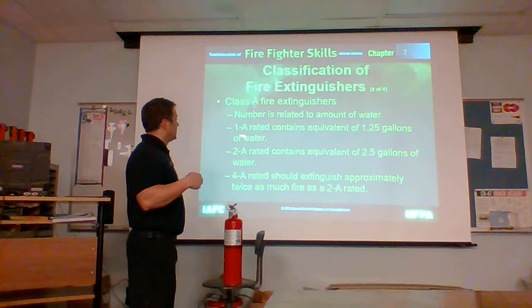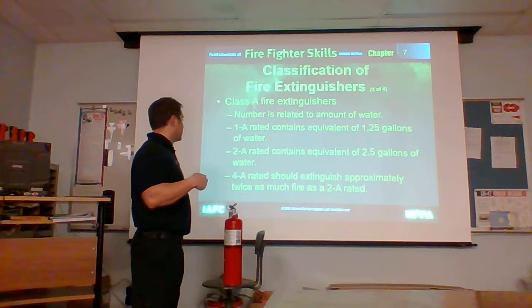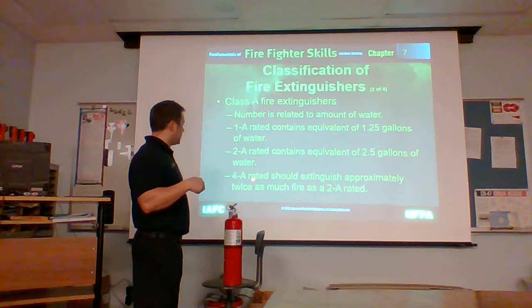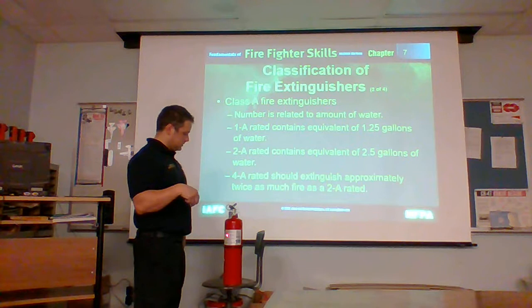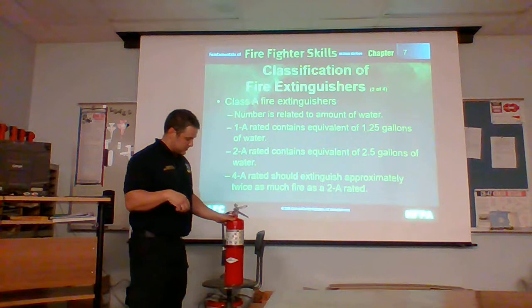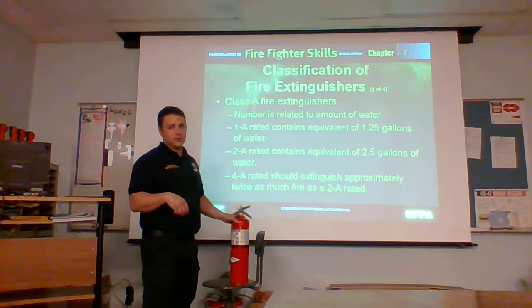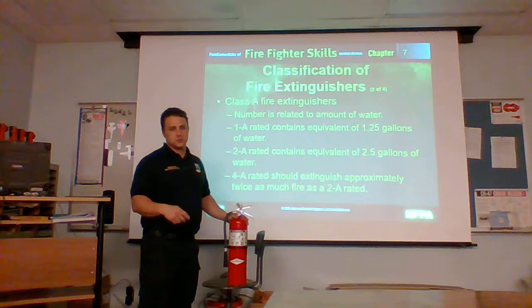A 1A rating contains the equivalent of 1.25 gallons of water. 2A contains the equivalent of 2.5 gallons of water. The 4A contains approximately twice as much as the 2A, so this would be about the equivalent of 5 gallons of water. But this is in a 10-pound extinguisher, and 5 gallons of water would be around 40 pounds — a whole lot easier to carry this than 40 pounds of water.